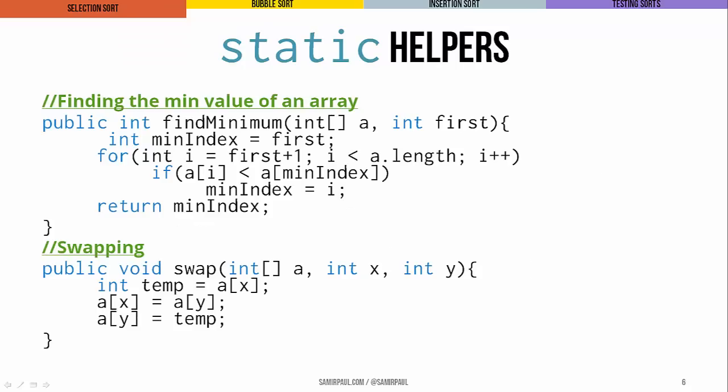It may be worthwhile to stop and look at those two helper methods. Find minimum takes two parameters — the array and the position where we want to start the search — and returns the index of the minimum element. We use a for loop, starting min index at first, and loop until we find the smallest element. Swap behaves just as you'd expect — it stores the first element in a temp variable and exchanges the two values in the array. To summarize selection sort: take the current element, find the smallest element at or after that position, swap them, then move on to the next element.